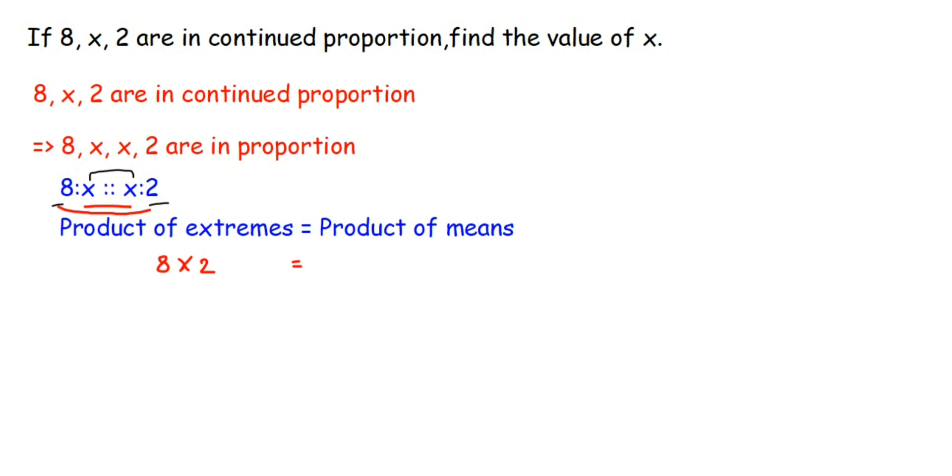Now mean terms are x and x. So x times x is x square. Now 8 times 2 is 16. We get 16 equals to x square.